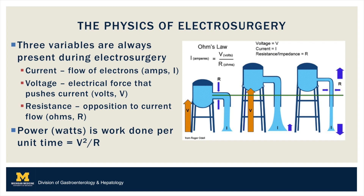The three variables in electrosurgery that create effect are current, which is the flow of electrons; voltage, which is the force that pushes that flow; and resistance, which is opposition to current flow, as spectrally represented on the right. Current varies directly with the voltage, whereas it varies inversely with the resistance. Power, on the other hand, represents work done per unit time.